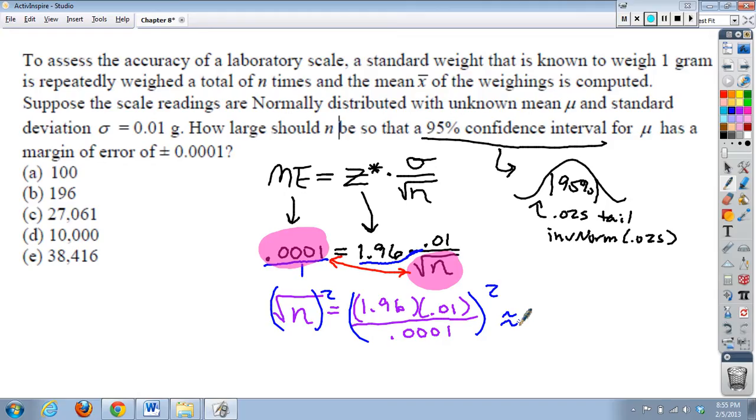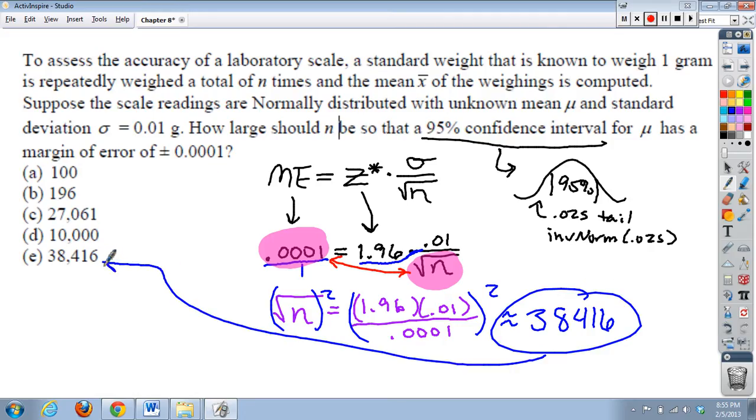And I get a rather large number here, 38,416. That is how many times I need to weigh a 1 kilogram mass to ensure a margin of error that is .0001. That's a lot of times.